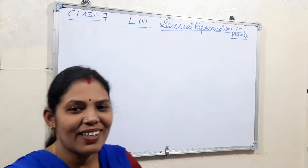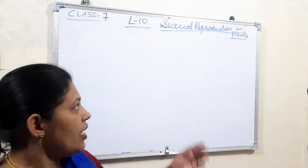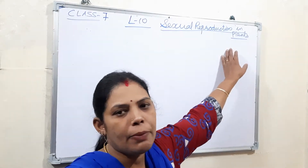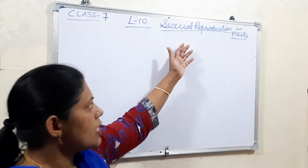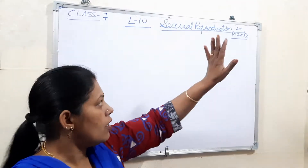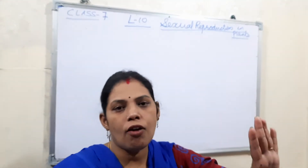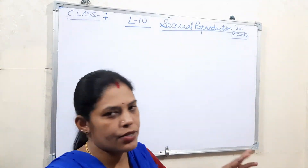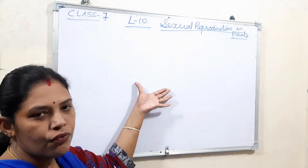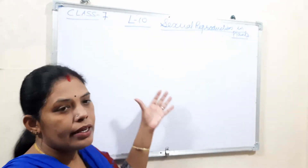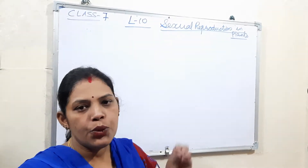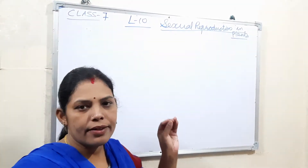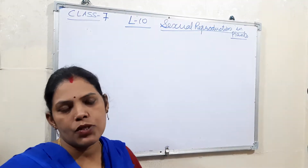Good morning children. Today we will learn about sexual reproduction in plants. In sexual reproduction there is the fusion of male gamete and the female gamete. After the fusion of the male and female gamete, we get a new cell that is the zygote, and from the zygote the new individual is produced.